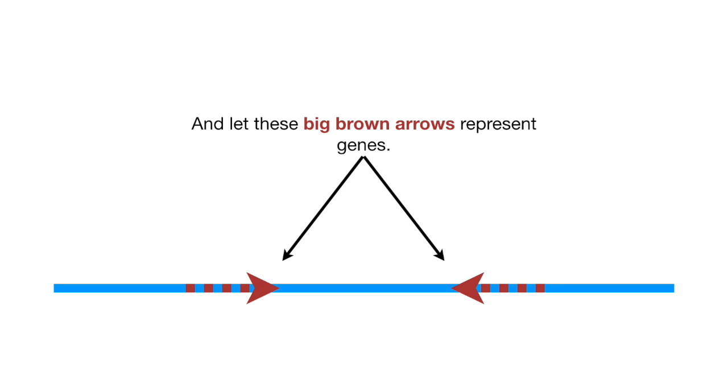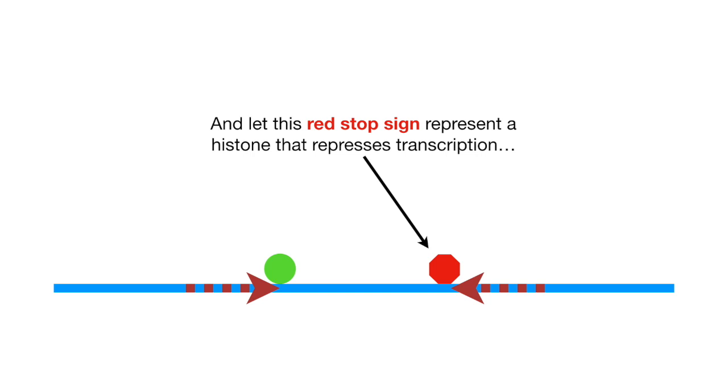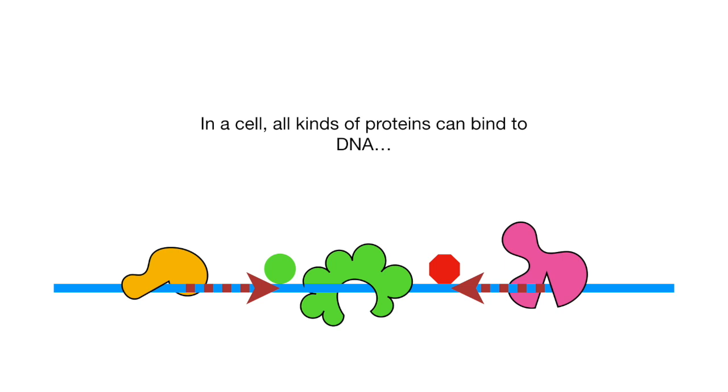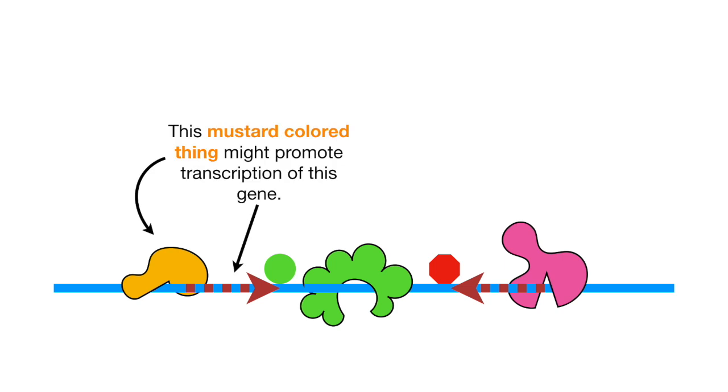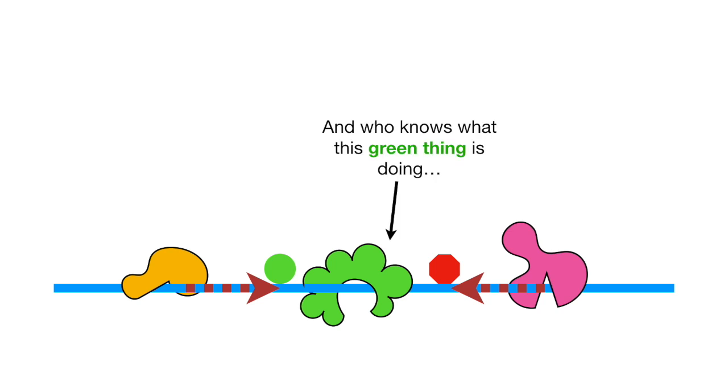And let these big brown arrows represent genes. And let this green circle represent a histone that allows transcription, and let this red stop sign represent a histone that represses transcription. In a cell, all kinds of proteins can bind to DNA. This mustard-colored thing might promote gene transcription. This pinkish-colored thing might repress this gene. And who knows what this green thing is doing? We can use ChIP-Seq to find out.